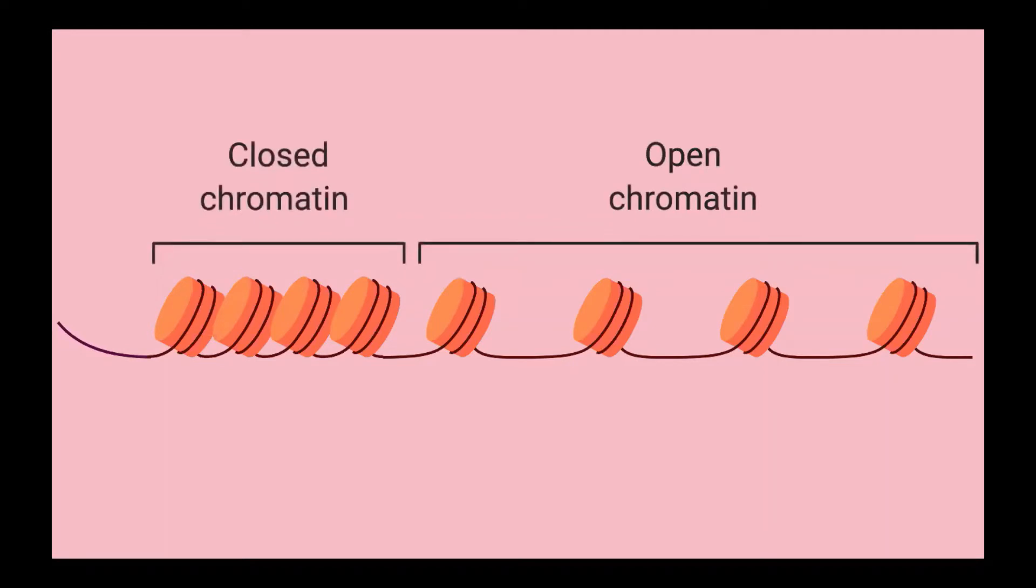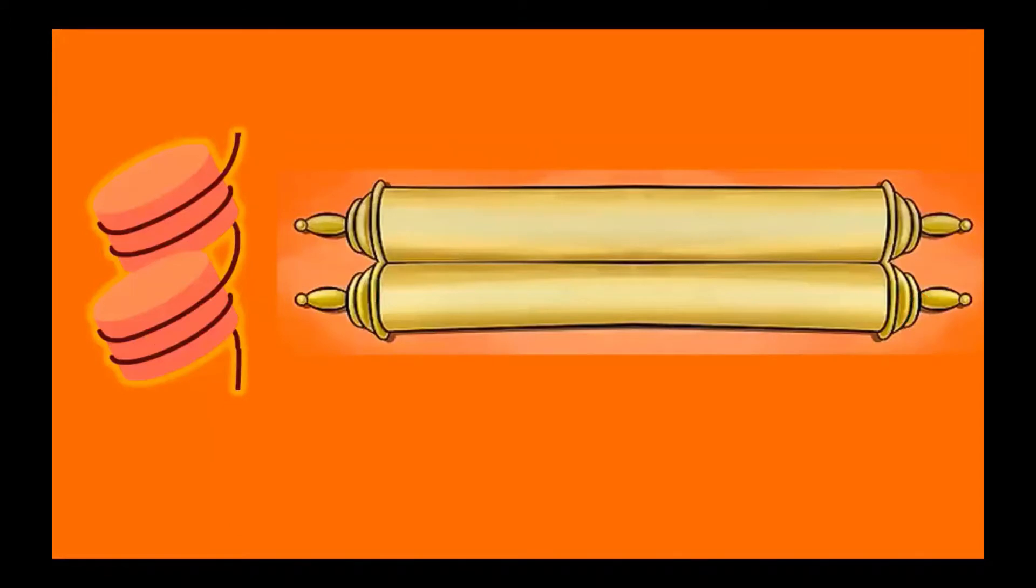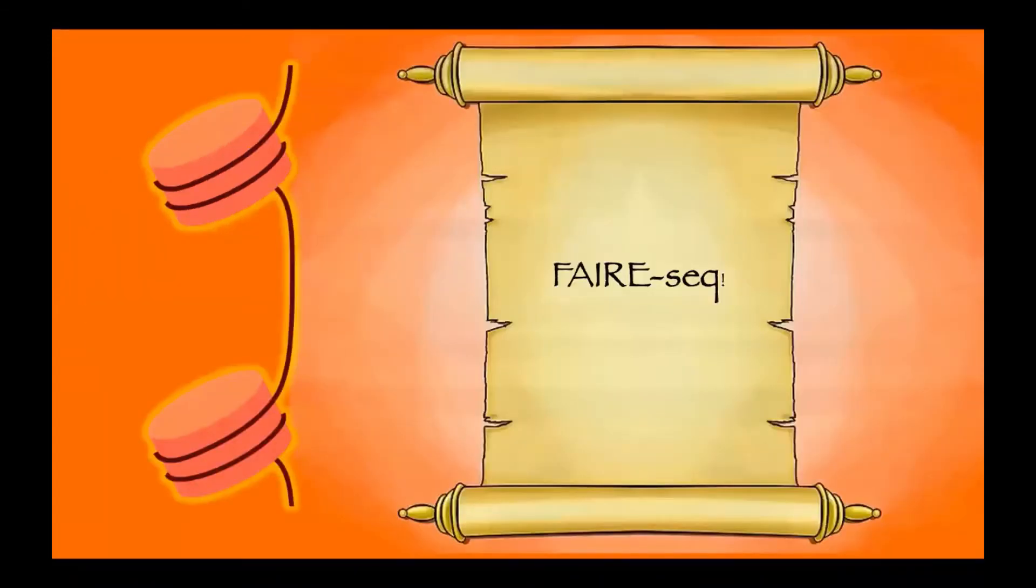To understand these, let's use a scroll analogy. DNA carries all the genetic instructions our bodies need to survive, so it's important that information can be accessible. Think of the wooden bars as histones and the paper as DNA. When the scroll is rolled up, we cannot read what's written on the paper, but when it's unwound, we can read it. DNA works in the same way.